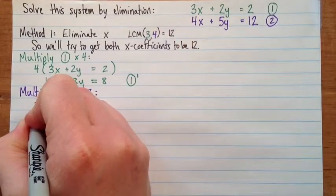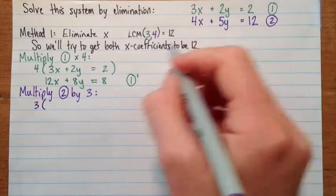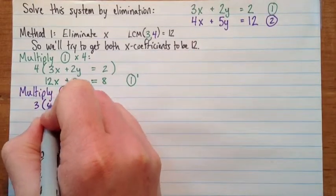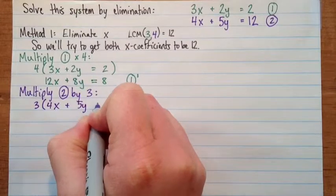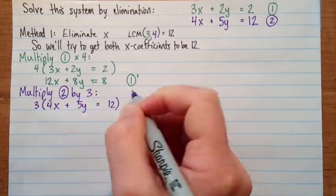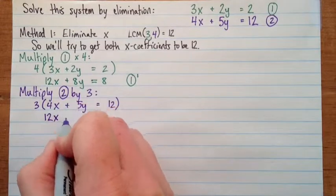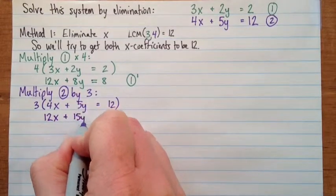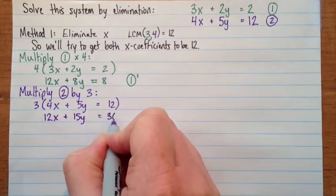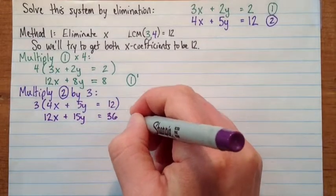So we have 3 times equation 2, which is 4x plus 5y equals 12. So if we multiply both sides by 3, we get 12x there. That was what we wanted. Plus 15y equals 36. And that is equation 2 prime.